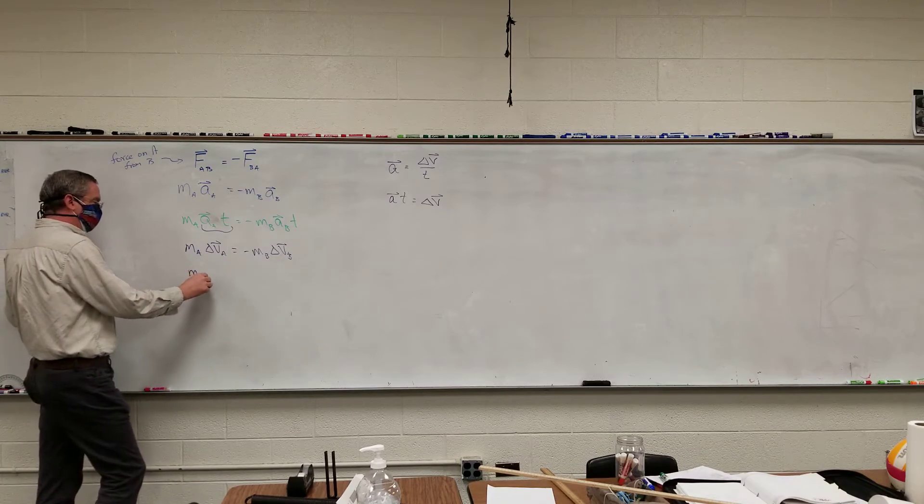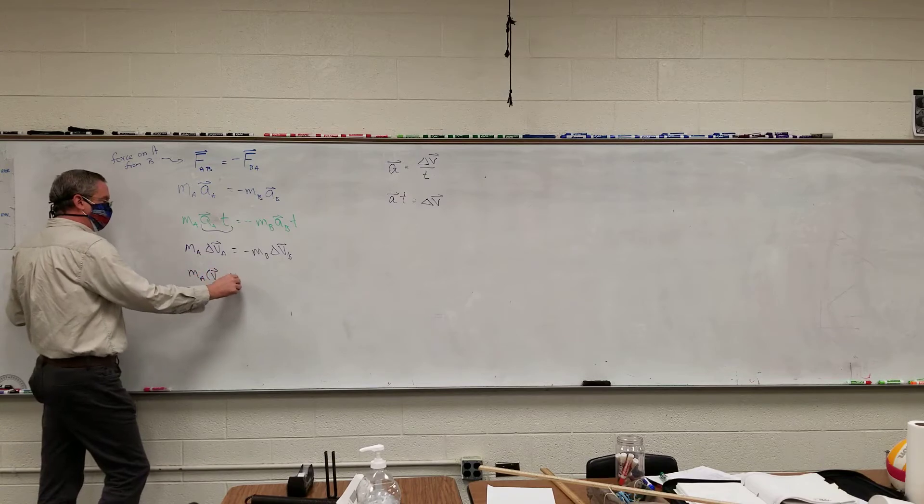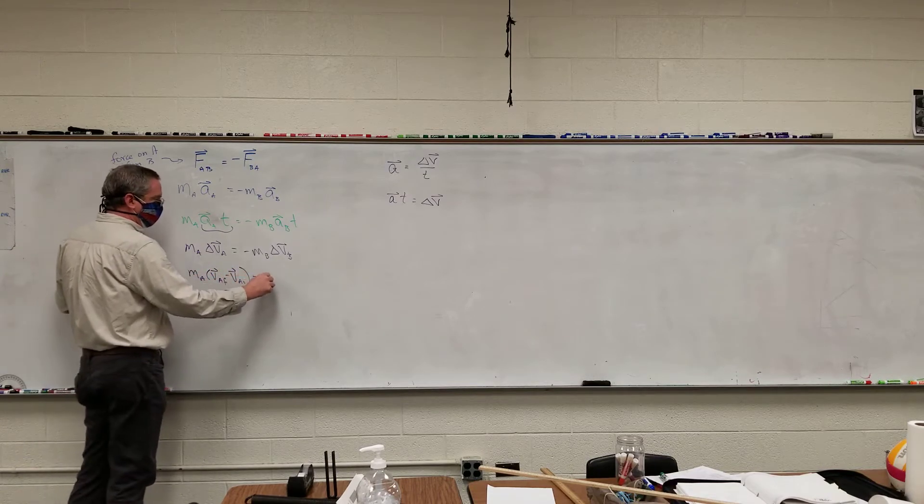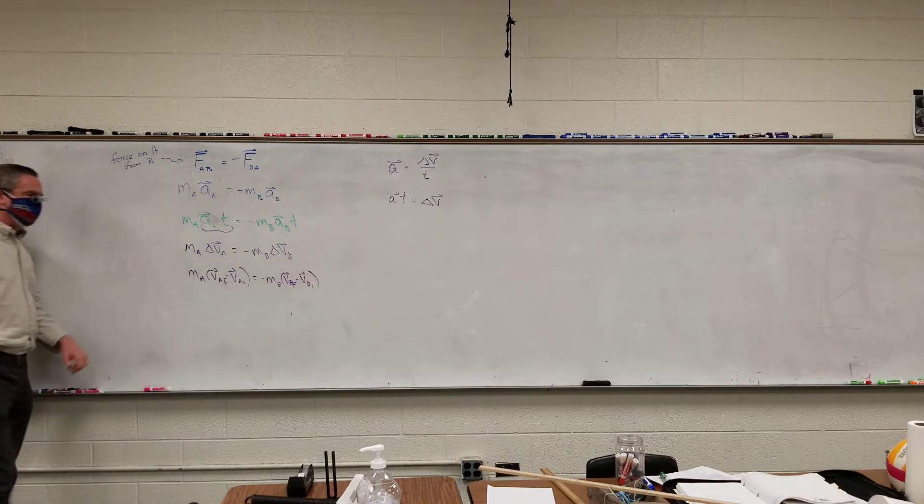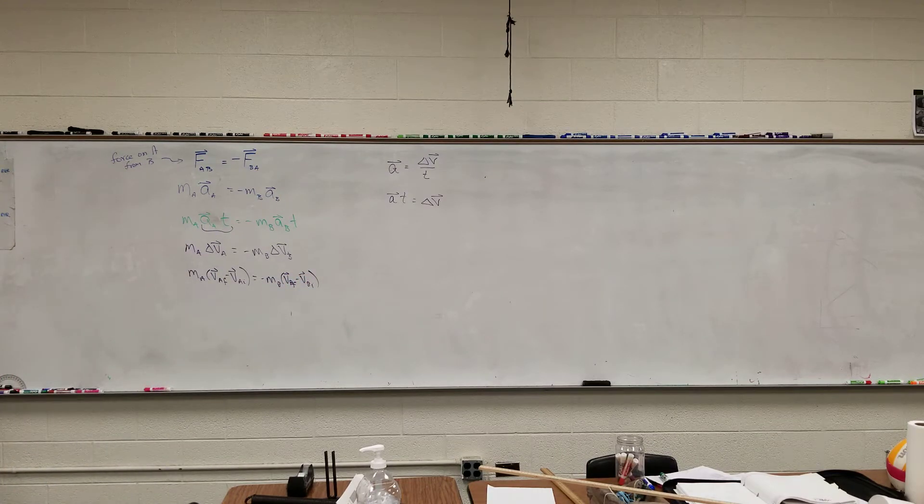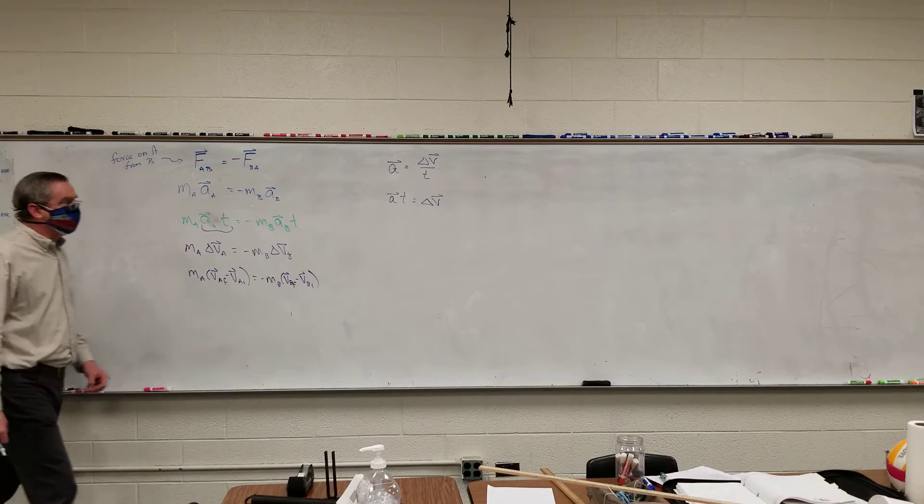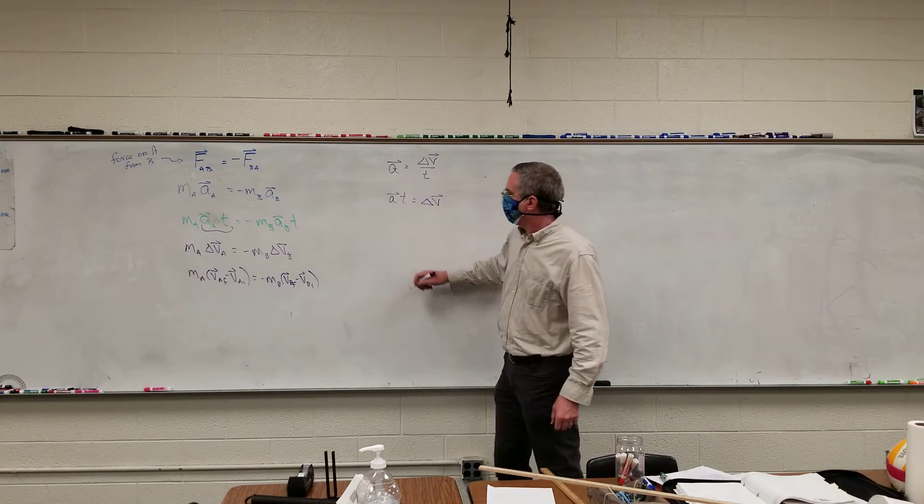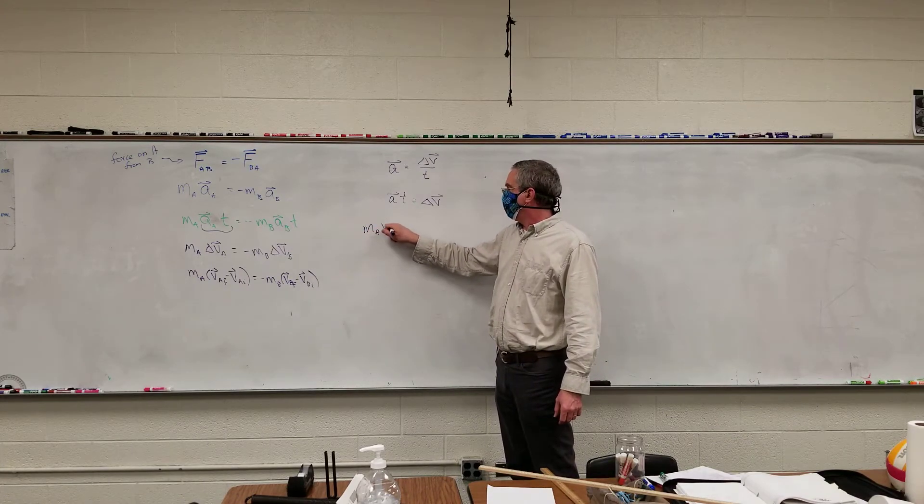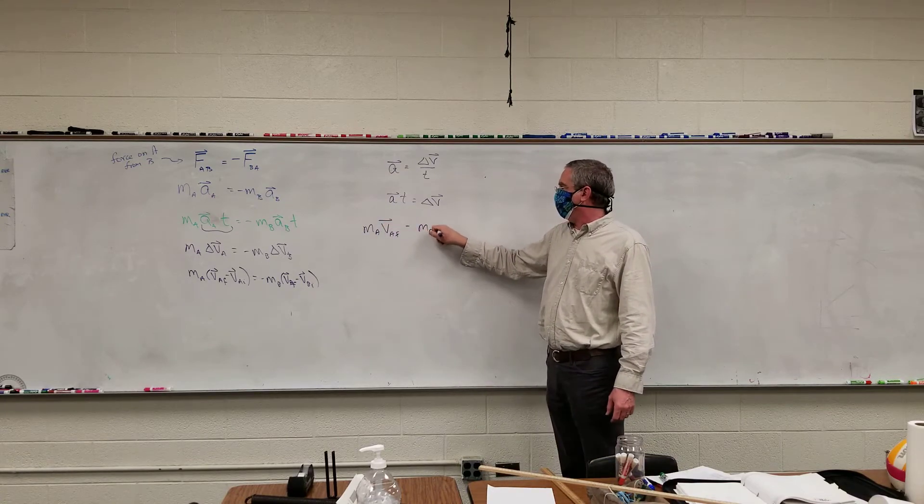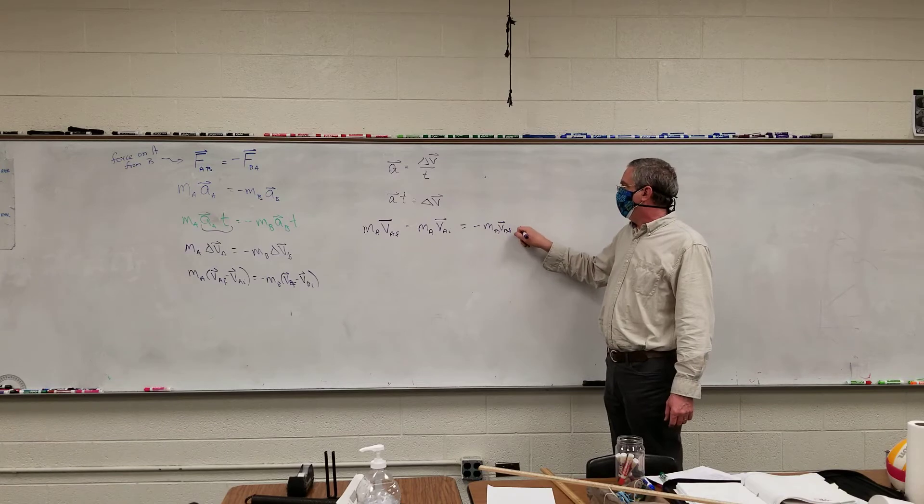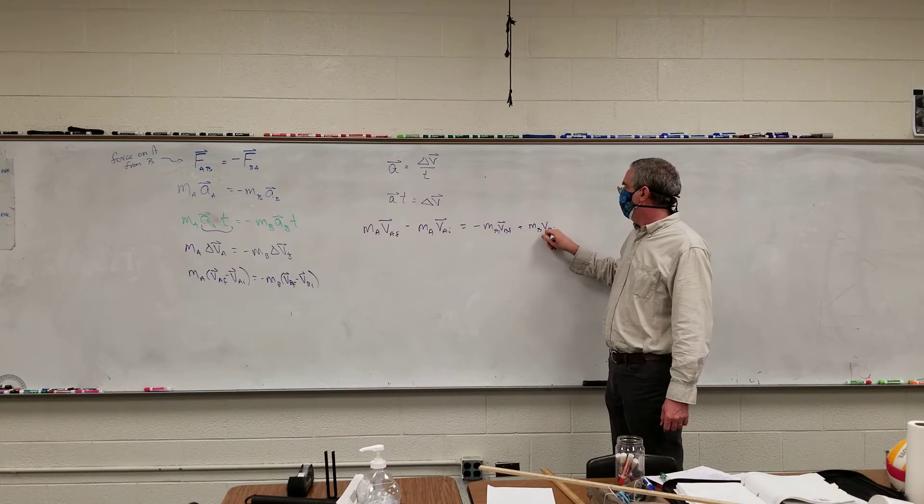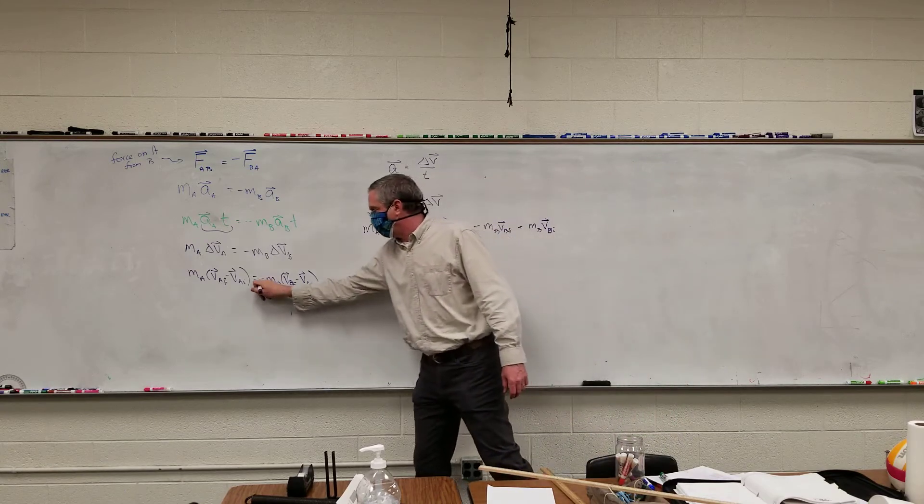Change in velocity over time. Therefore, what is acceleration times time? Change in velocity. So, I'm going to multiply by the time. This is mass of A times V_A final minus V_A initial. This is negative mass of B times V_B final minus V_B initial. Mass of A times V_A final minus mass of A times V_A initial equals negative mass of B times V_B final plus mass of B times V_B initial.